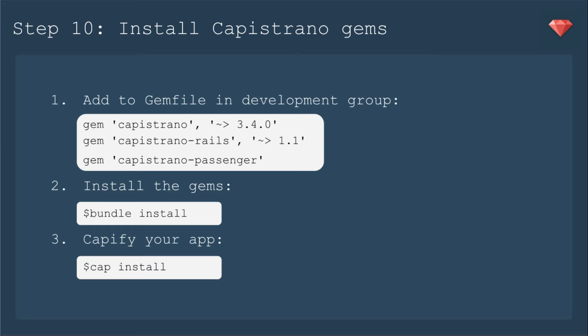First we need to add to the gem file in the development group the gem Capistrano. Then we're going to include the gem Capistrano Rails, which has a couple of methods to run Bundler and to run migrations. We're also going to include Capistrano Passenger, which has methods that will restart the app when deployment is done — which is very important. We'll install the gems with Bundle Install. Then we need to Capify our app, which will install a couple of files that are necessary for Capistrano.